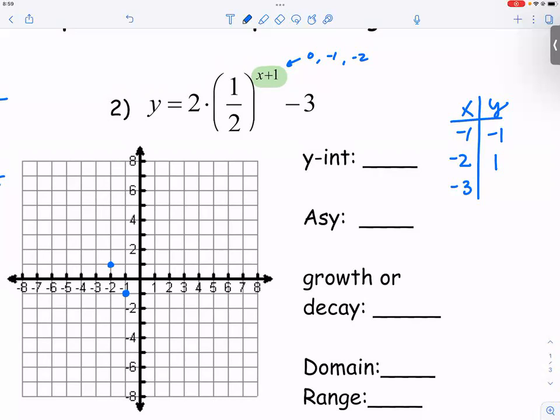One half to the negative two power, it's four. Four times two is eight. Eight minus three is five. So we have this number right here.